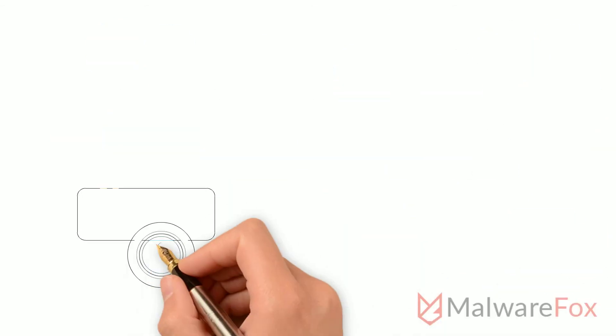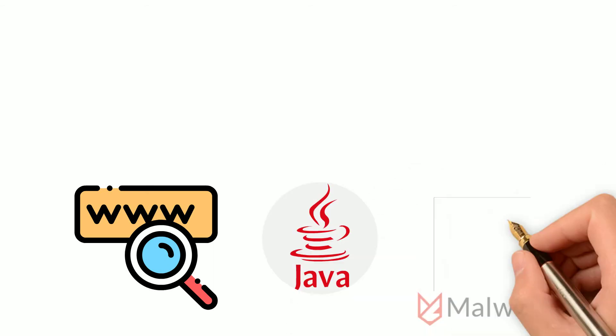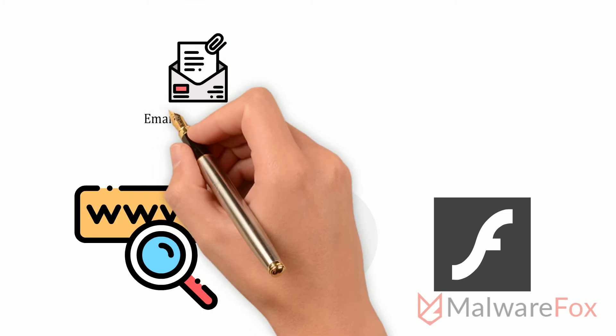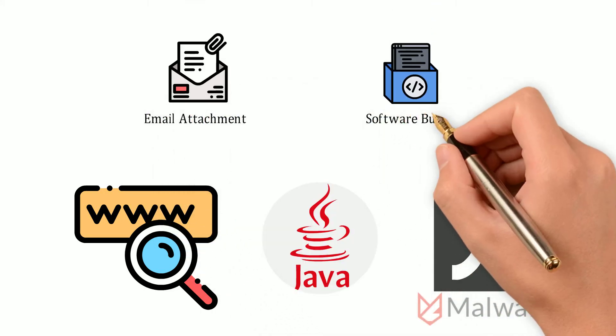Attackers exploit these vulnerabilities by various means. Web browsers and software like Java and Flash are more vulnerable. Attackers might locate unsecured users through email attachments or software bundles.